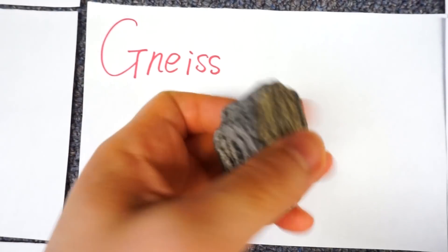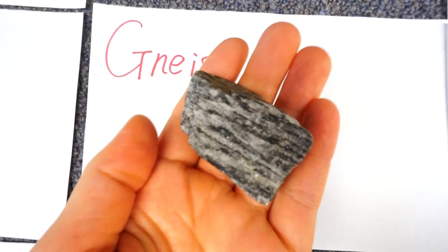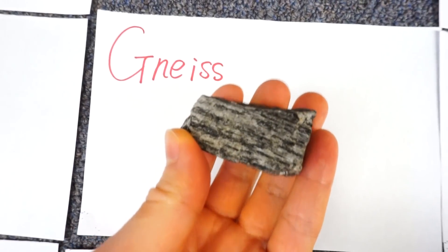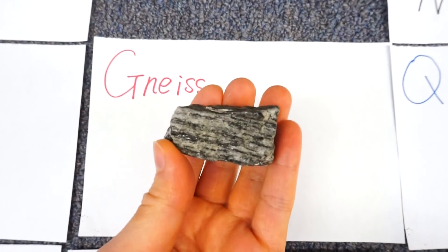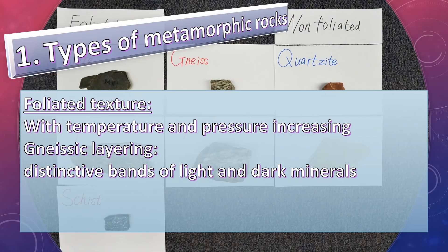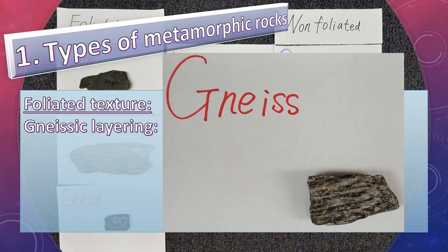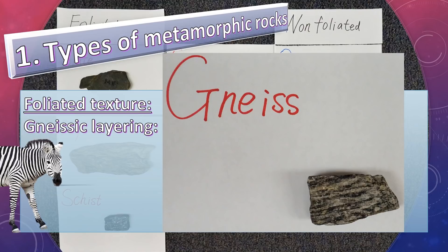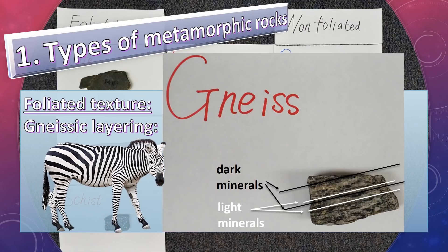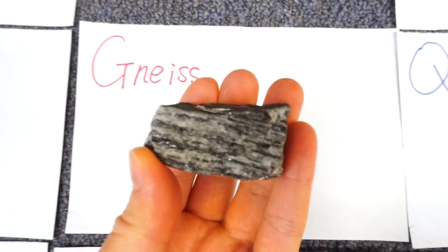Finally, gneiss. Gneissic layering means distinctive bands of light and dark minerals. This is a sample of gneiss — it shows gneissic layering. Like a zebra, you can see the layering of dark minerals and light minerals.